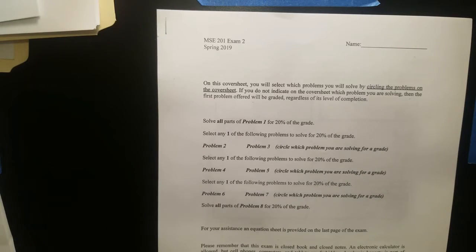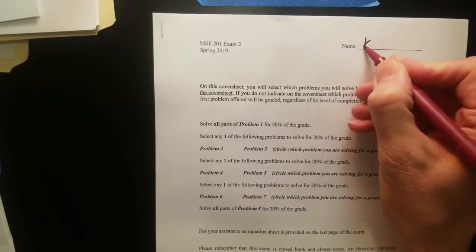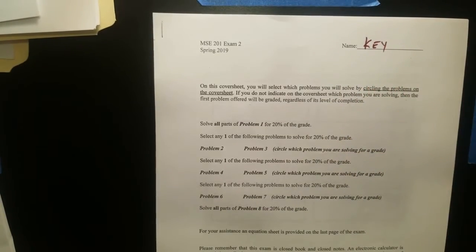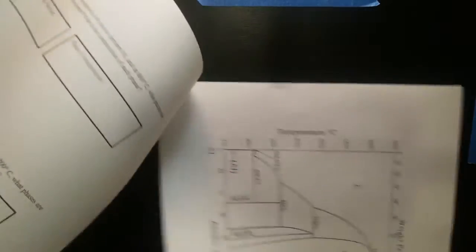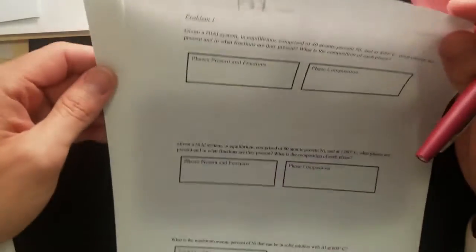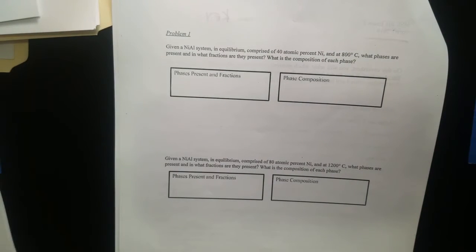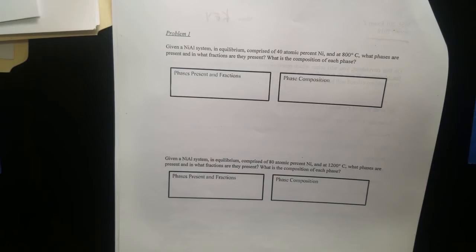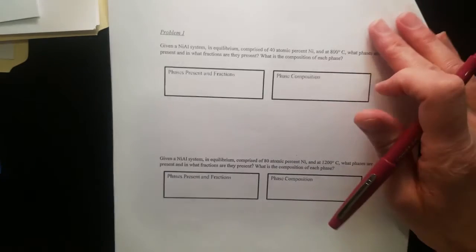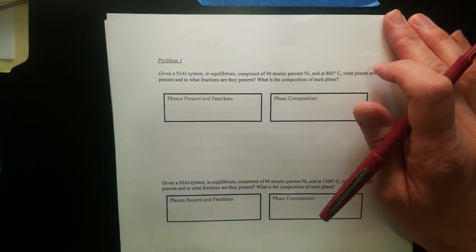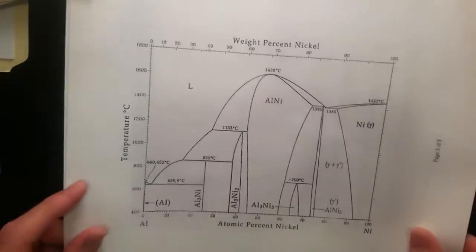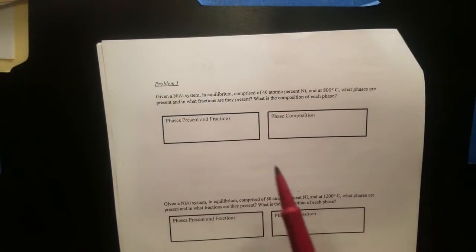This is the solution guide to exam 2 for MSE 201 Spring 2019. The first problem is a phase diagram problem, and it is very similar, if not bordering on identical to quiz 3 we had. We had exactly the same phase diagram and everything. Just going through it quickly because you can always go back and look at the solution to quiz 3.